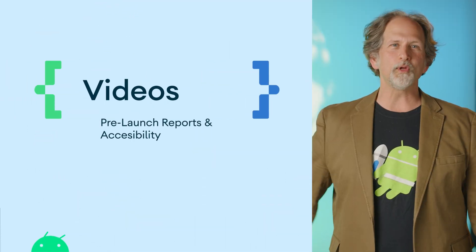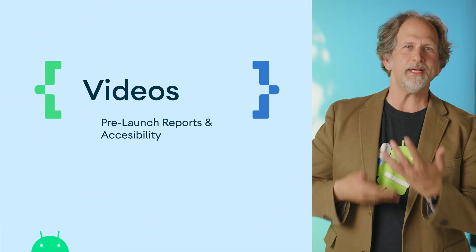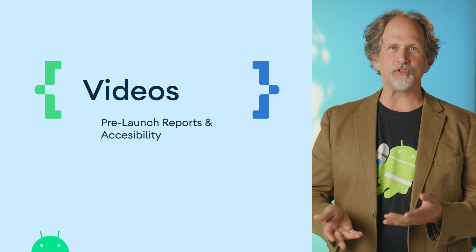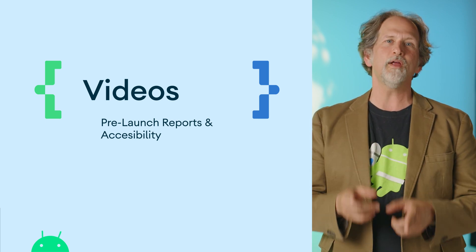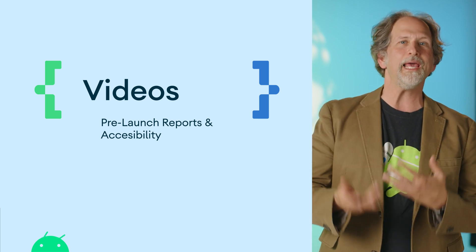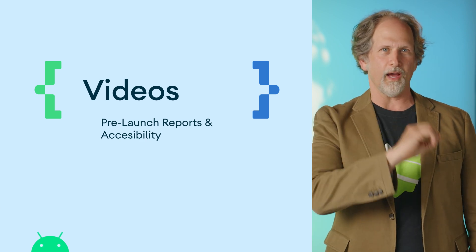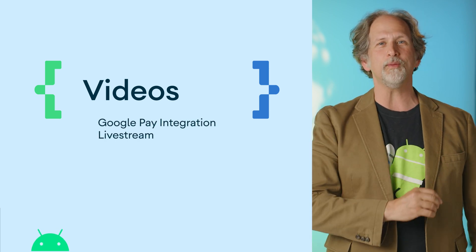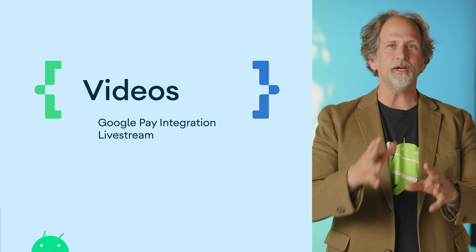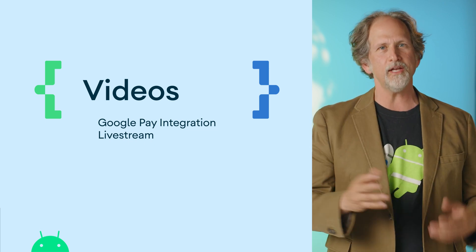The Google Play team released two videos detailing common accessibility issues around content labels and color contrast, and how pre-launch reports, or PLR, can help identify them in your app. The Google Pay team did a live stream where they walked through an integration tutorial, answering questions from the audience, and a recording is available for you to watch.